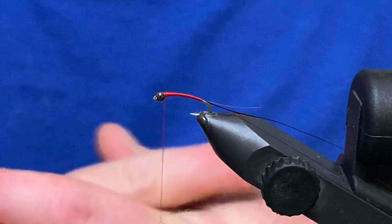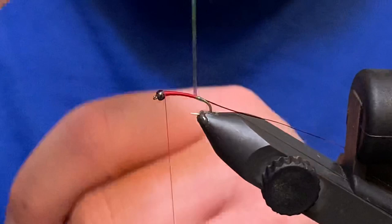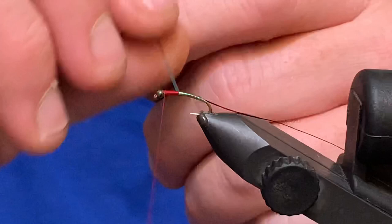So really neat stuff. When you wrap this, try not to overlap your wraps too much. You want to allow that red thread to come through, so just keep your wraps side by side.